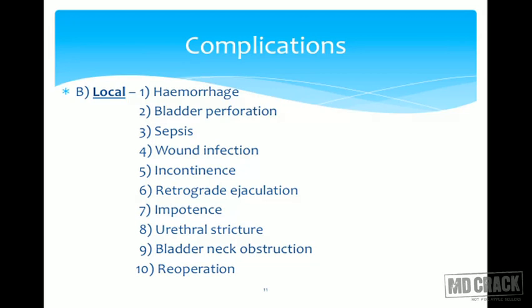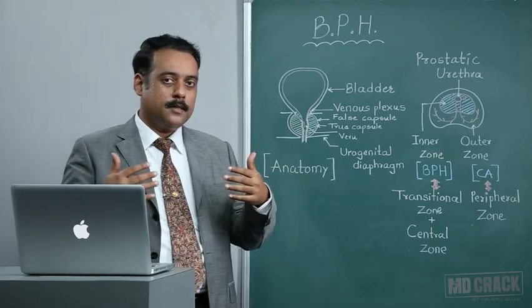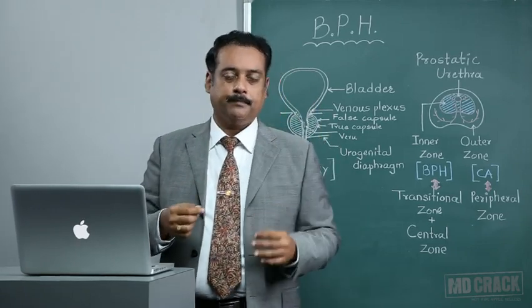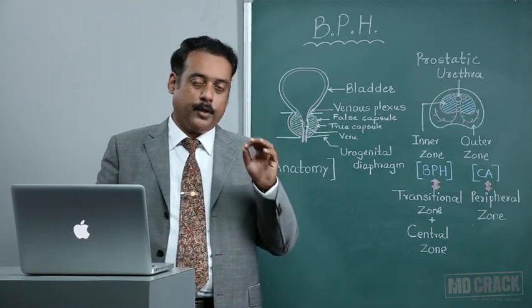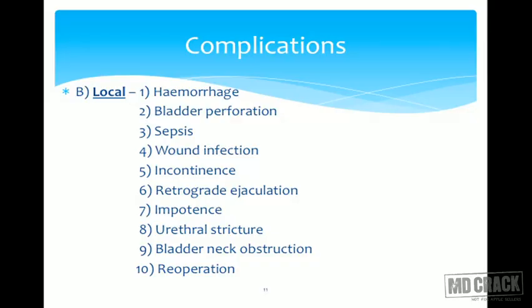Next, local complications associated with this procedure. There can be hemorrhage — a lot of bleeding can occur because BPH has a very good blood supply, with a lot of venous plexus and arterial supply in the capsule. When ablating or removing the gland, there can be small pinpoint bleeding from the surface that requires meticulous coagulation. If good hemostasis is not achieved, there can be hemorrhage. Second, if the surgeon is inexperienced, one can damage the bladder by causing perforation, which can be totally avoided.